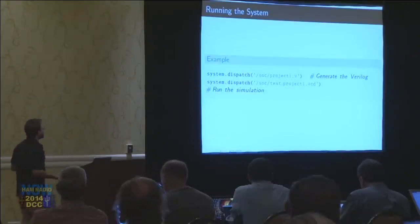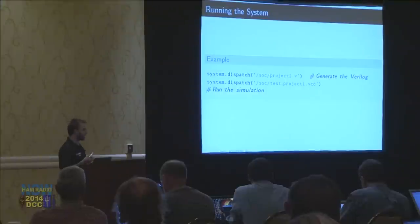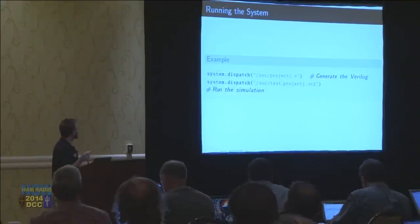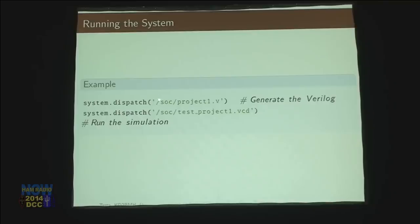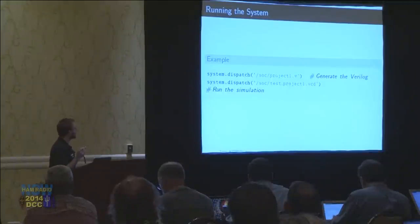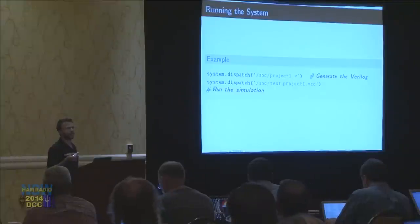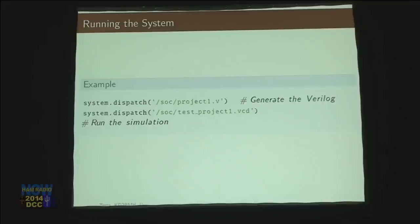To run it, you can dispatch — you can ask the system: let me get a view of my system, let me get a view of this thing project one. And what I want is the Verilog file for it. So when you run this line of code, it'll generate the Verilog file for you. And when you want that test function, if you run it for that test project dot VCD — the VCD file is the simulation result — it will run the simulation and give you that answer.